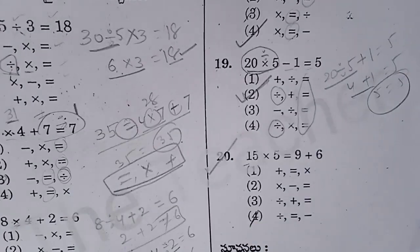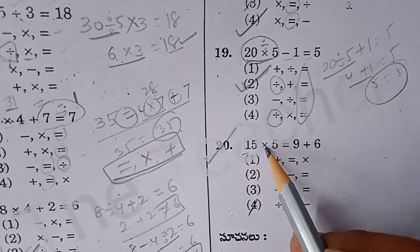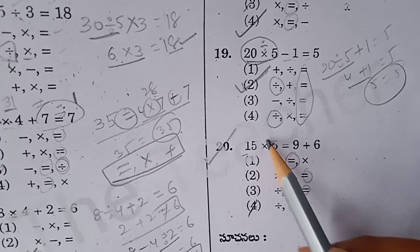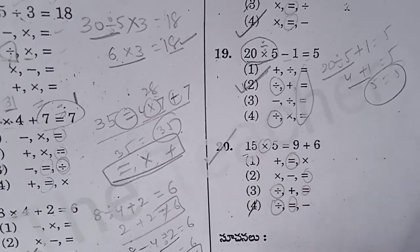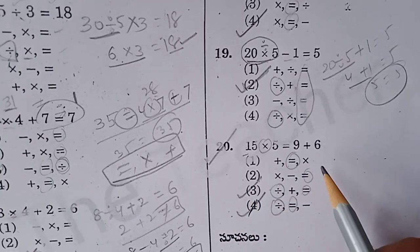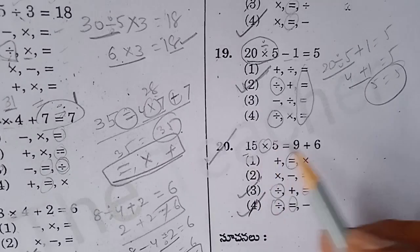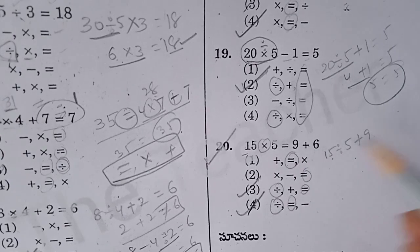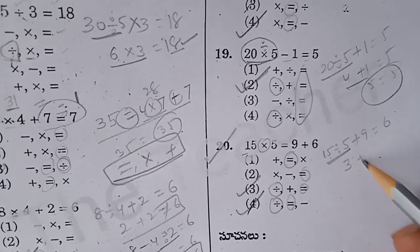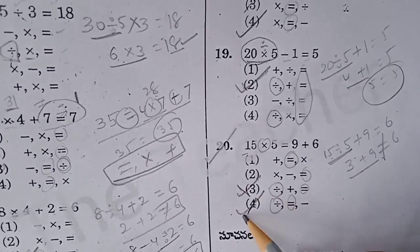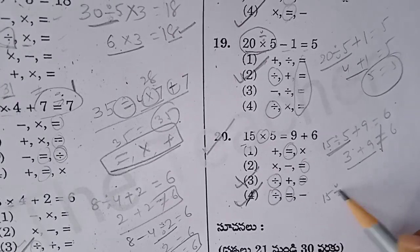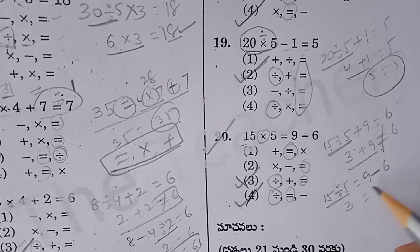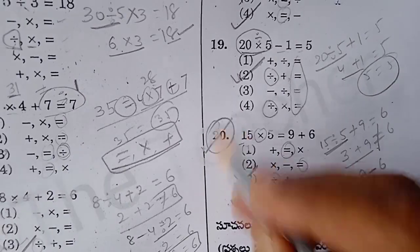Now see question number 20 — the last one. Here 15 into 5 equals 9 plus 6. So equals and into are present. Maybe replace into with divided by. Check option 3: 15 divided by 5 plus 9, plus plus gives — 3 plus 9 cannot equal 6. So option 4: 15 divided by 5, equals 9 minus — 3 equals 9 minus 6 is 3. Option 4 is the right answer for question number 20.